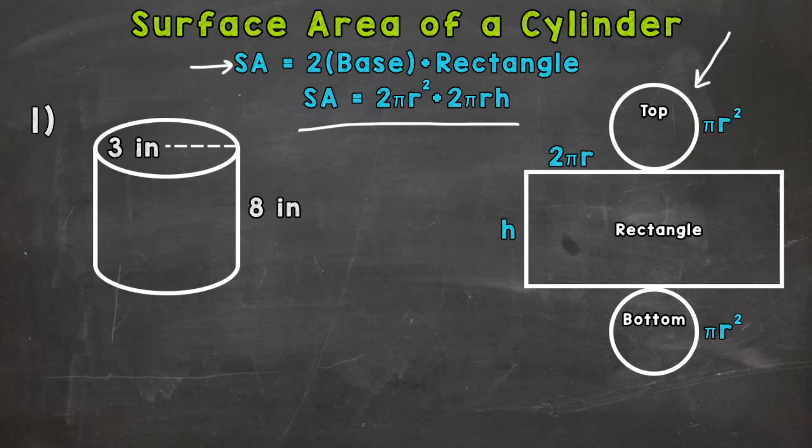So πr² here, that's the formula for the area of a circle. Our top and bottom, the bases, are circles. And we can multiply it by 2. If we find the area of 1, we have the area of both because they're both the exact same. That's why we're multiplying it by 2. So find the area of 1, multiply it by 2.